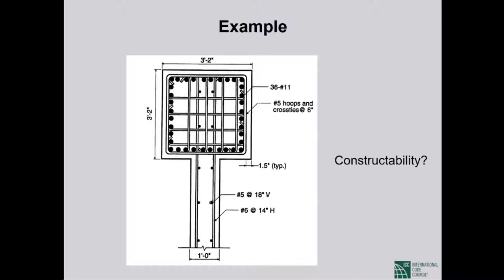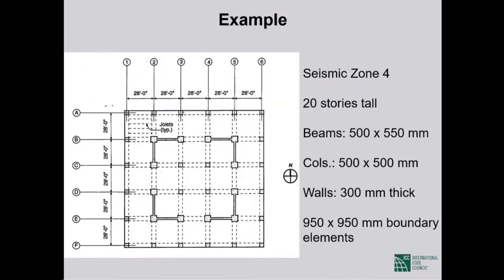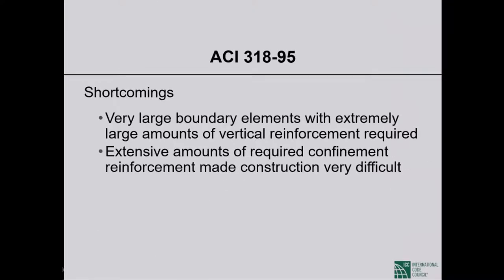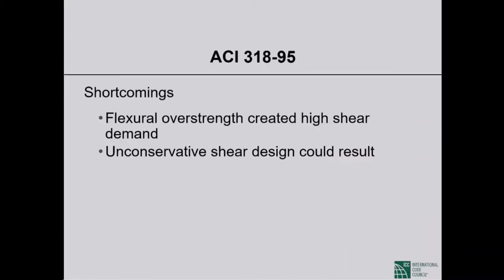The shortcomings of ACI 318-95 requirements were: very large boundary elements with extremely large amounts of vertical reinforcement, and extensive confinement reinforcement that made construction very difficult. Constructability was very poor. Moreover, all this reinforcement did not actually give a good shear wall — the walls had enormous flexural strength and would attract incredible shear in an earthquake, leading to unconservative and potentially unsafe shear design.